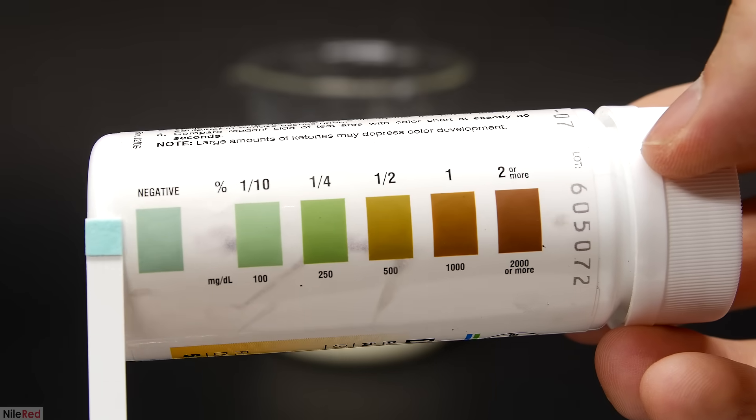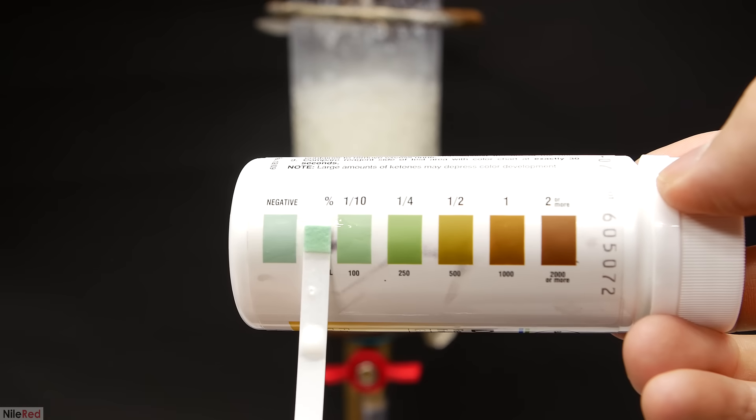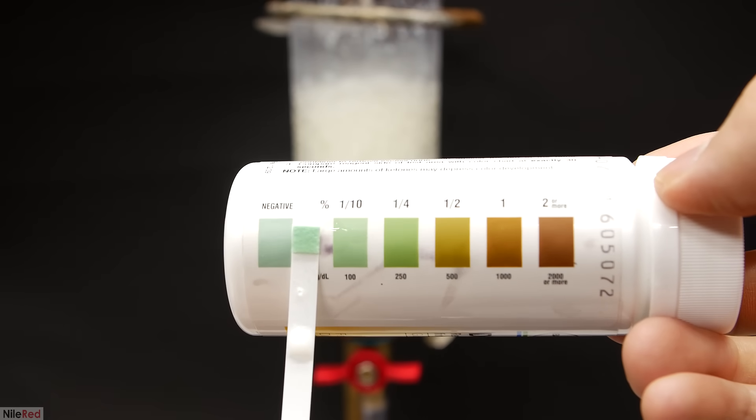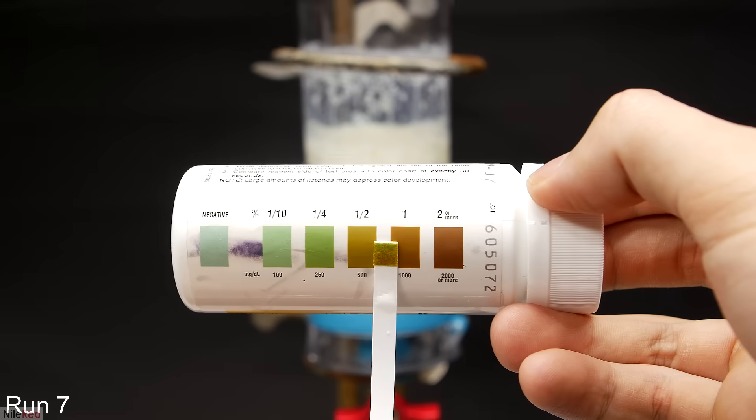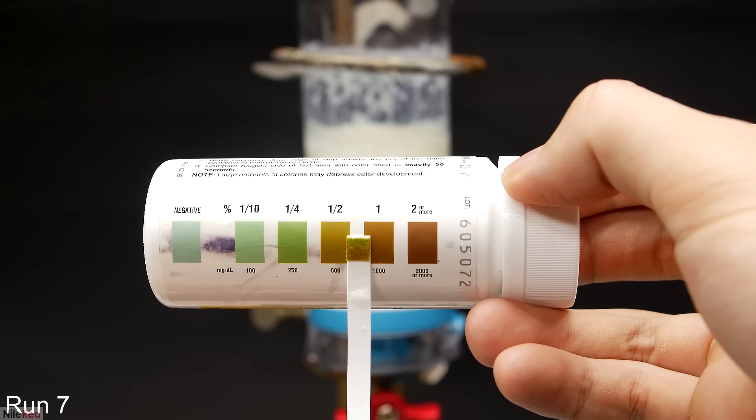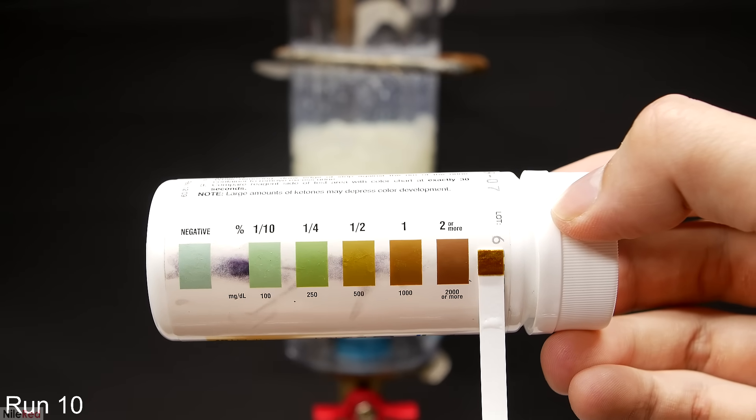In the first and second run it still tests negative, but by the third one it starts detecting glucose. Then with each subsequent run, the concentration slowly increased until by the tenth one it was off the chart.